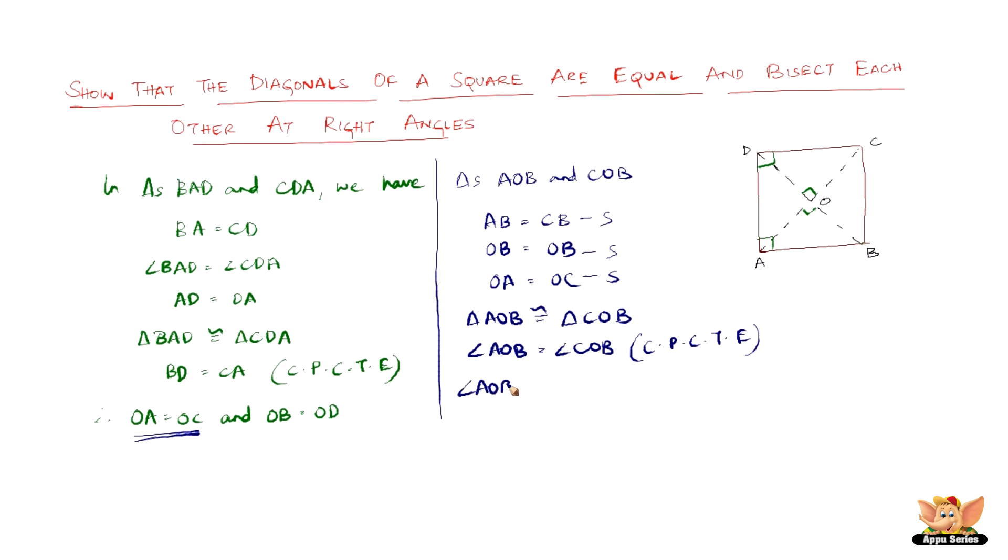But we have angle AOB plus angle COB equal to 180 degrees because these are angles on a straight line and the sum of them equals 180 degrees. So therefore we have angle AOB equals angle COB equals 90 degrees.